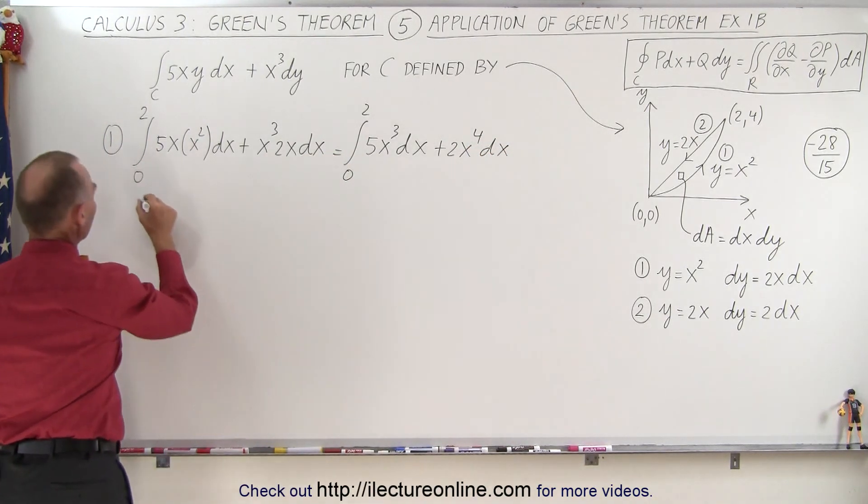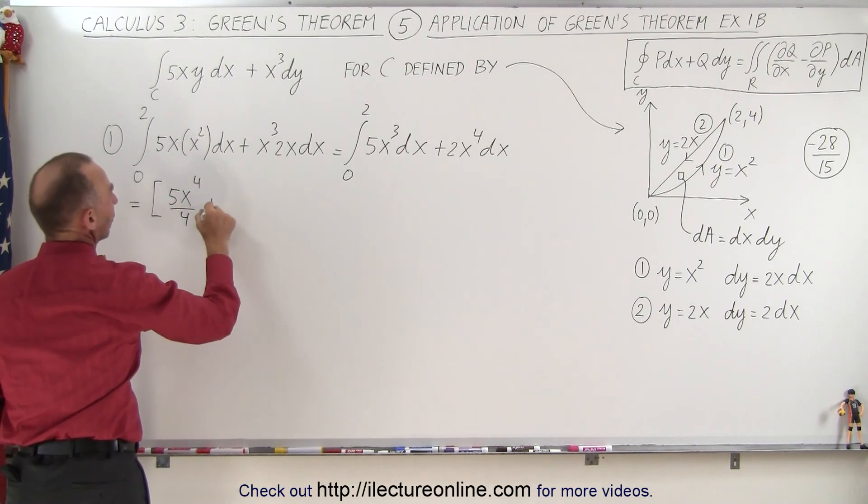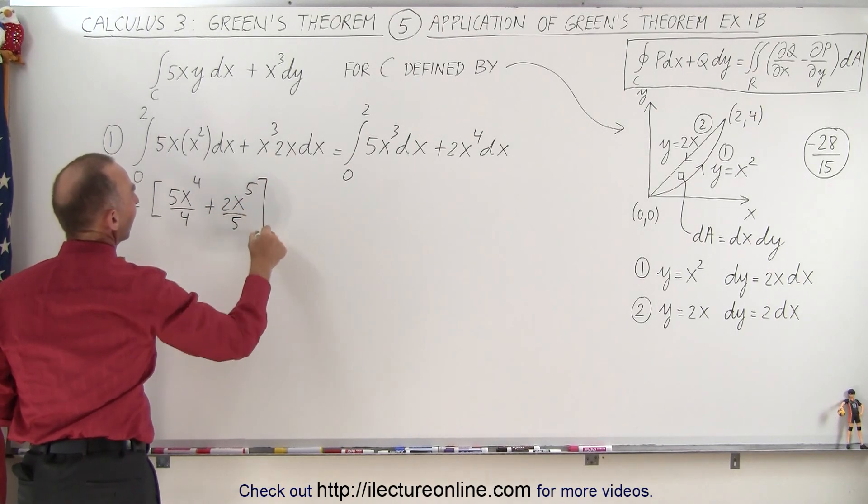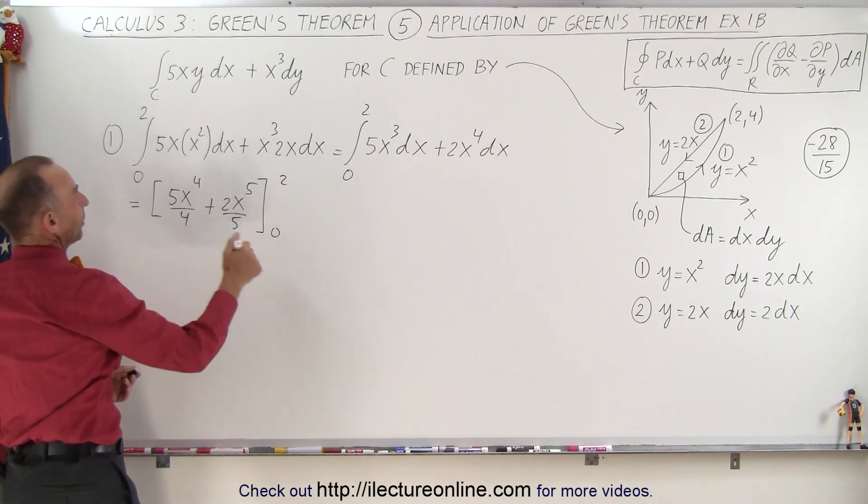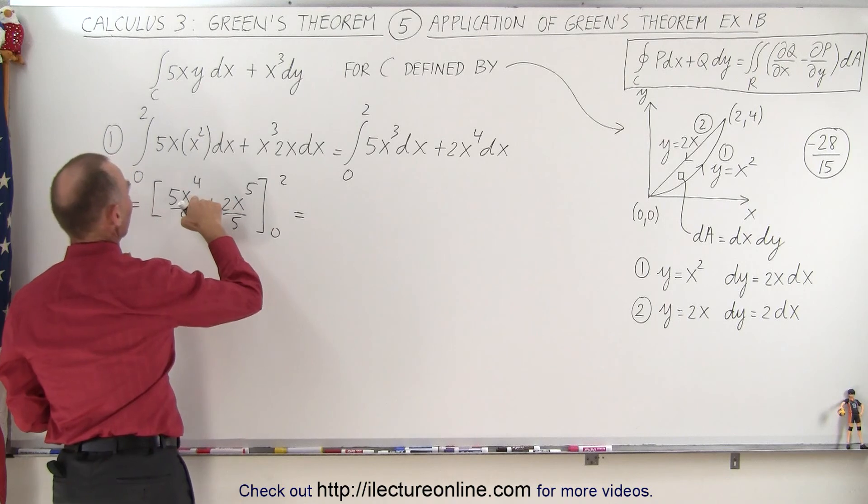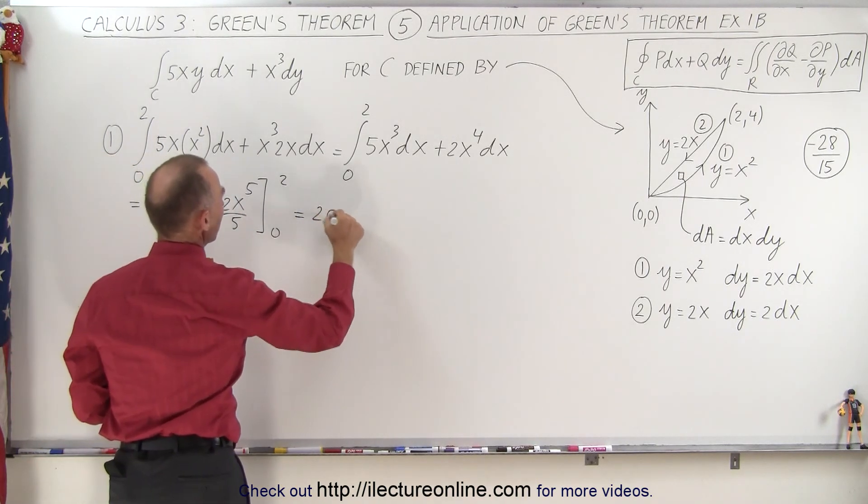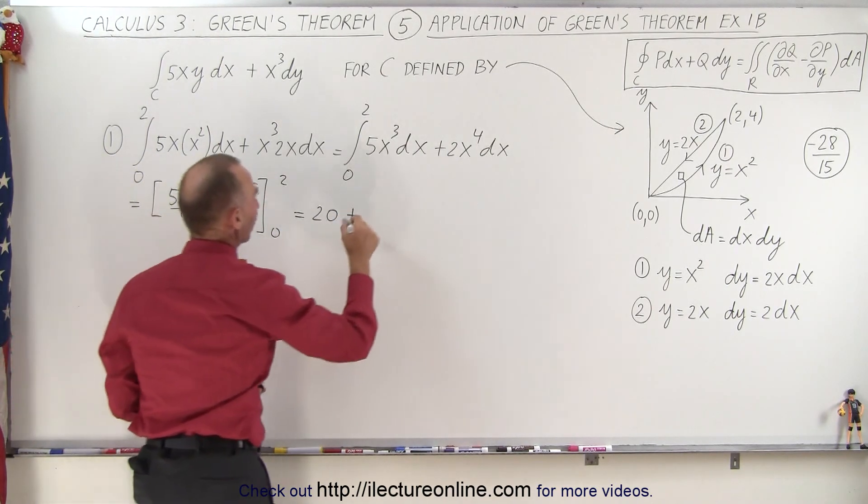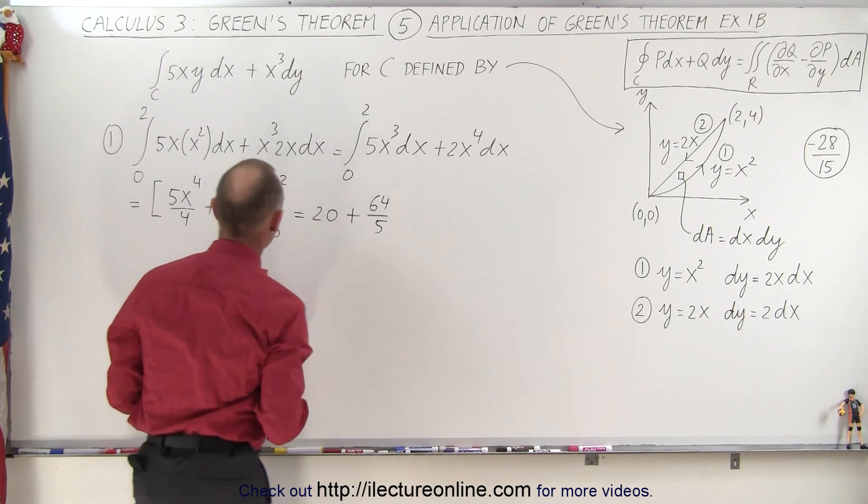When we integrate that, we get the following. This is equal to 5x to the 4th over 4 plus 2x to the 5th over 5, evaluating from 0 to 2. When we plug in the lower limit, we get nothing. Plug in the upper limit, we get 2 to the 4th is 16, divided by 4 is 4, times 5 is 20, plus 32 times 2, which is 64 over 5. So that is the result of our first integral.